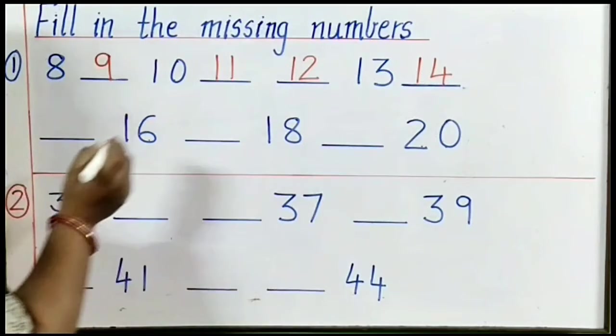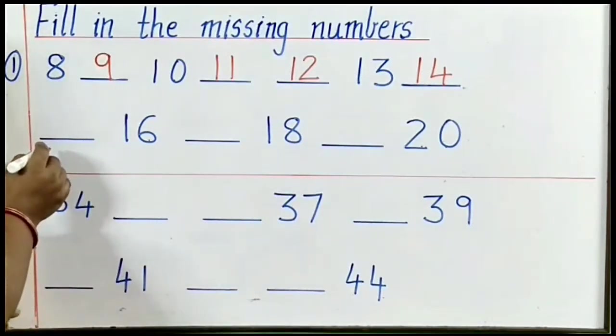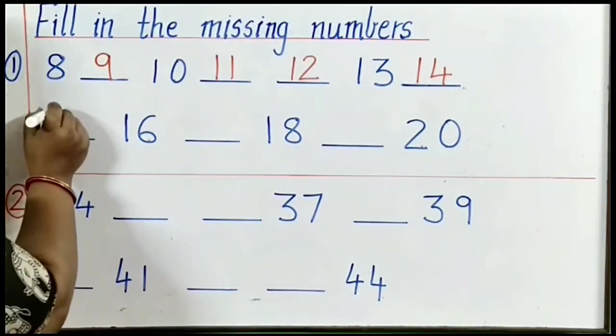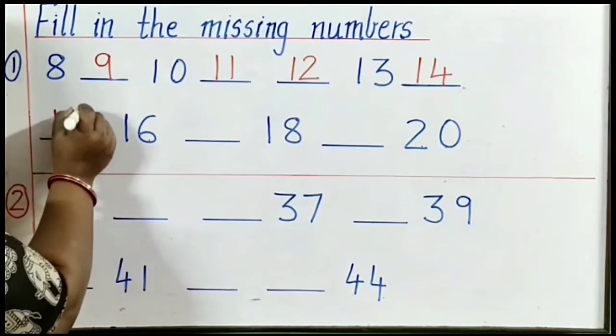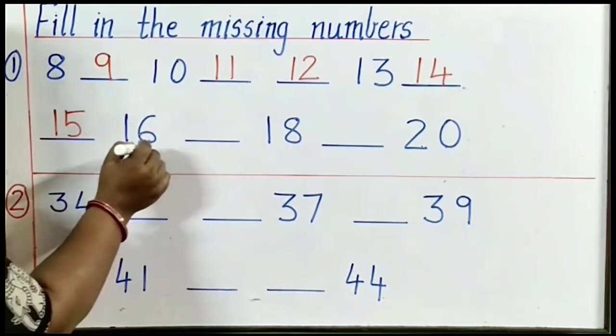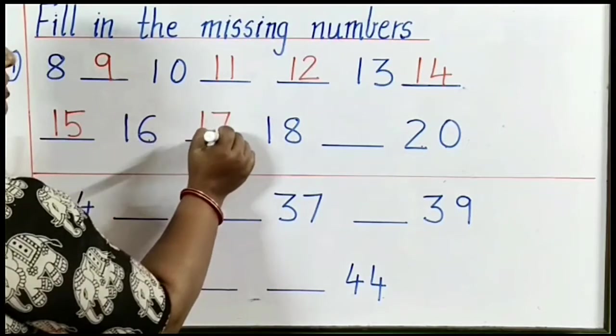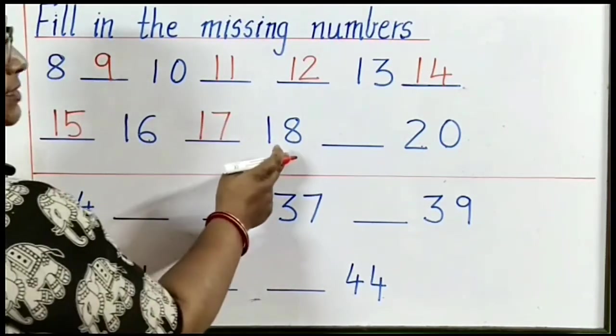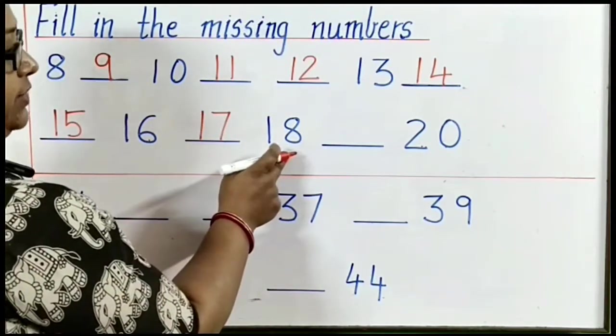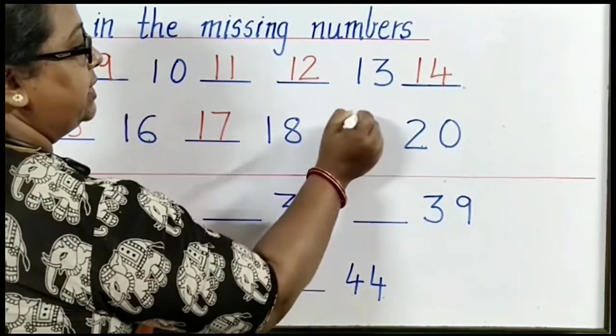After 14, what number should be here? Yes, 15. After 15, 16. Next number is 17. 18 is already here. After 18, 19.